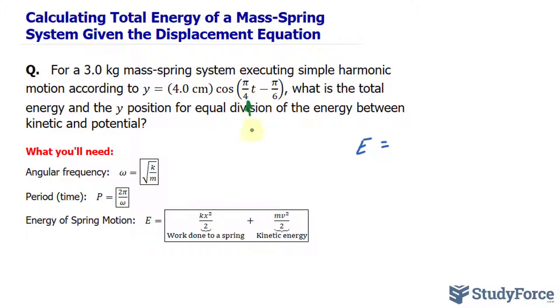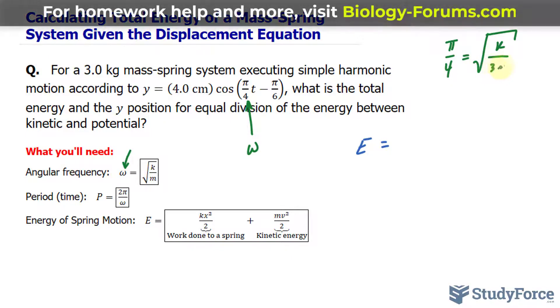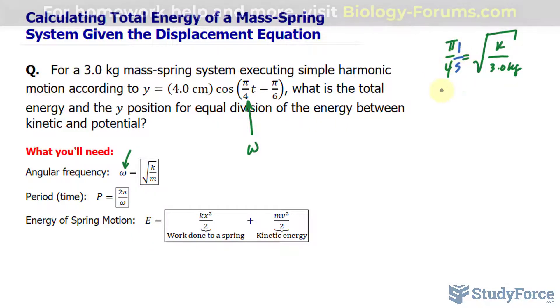Because if we analyze this equation, you'll notice that this value right here represents omega or the angular frequency. So what I could do is use this formula where I have π/4 in for omega is equal to the square root of k, k being the spring constant which we need to plug into this formula, over m. m represents the mass, so I have 3.0 kilograms in for that. I also want to mention that the units for omega are per second.